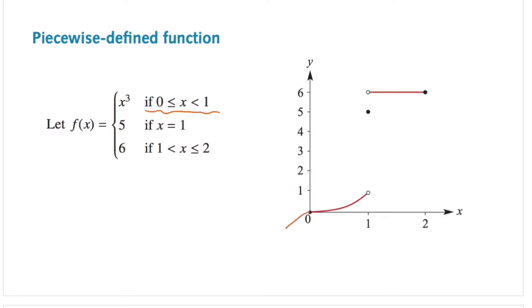So usually the cubic function looks something like this. However, since we're restricting the domain, it's going to look different. Greater than or equal to is a closed dot because we are including the value zero. That's why we started off with a closed dot. And we have an open dot at 1, since the upper bound is less than 1, so it doesn't really include 1. That's why we use an open dot. That explains the first piece of this graph.